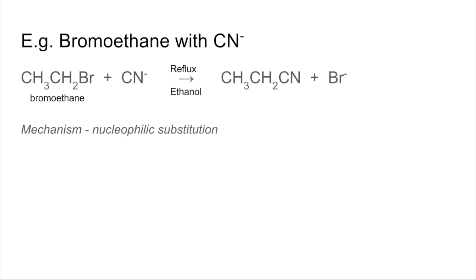So if we look at a specific example now: bromoethane with CN- ions. So here's the reaction CH3CH2Br plus CN-, conditions above the arrow, and there's the product, and in this case we're going to get a bromide ion produced. So what's this nitrile called? It's called propanenitrile because it's got three carbons. And the mechanism is nucleophilic substitution.